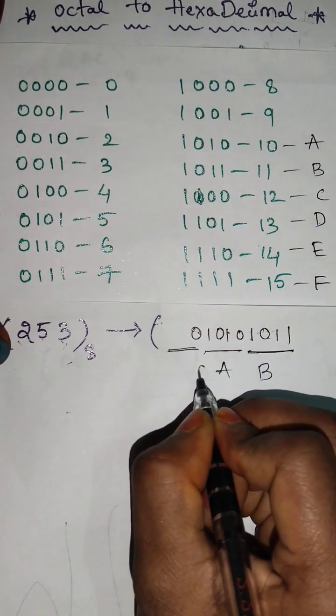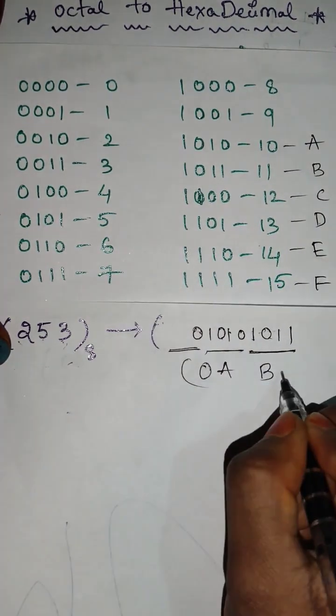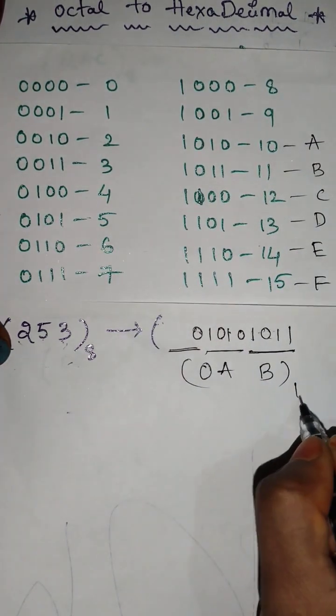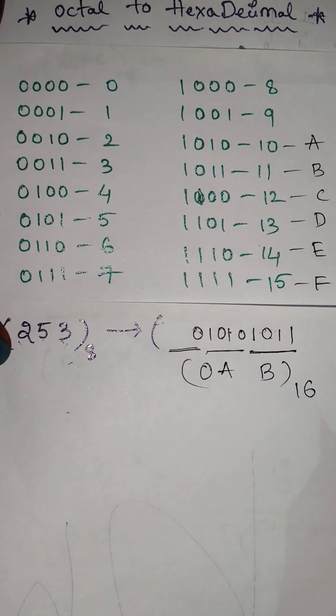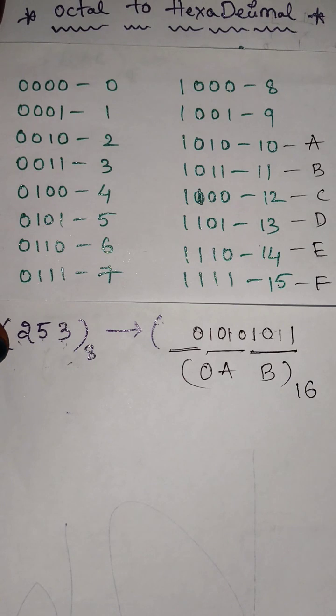0 means 0. So this is the equivalent hexadecimal number: 0AB for the octal number 253.